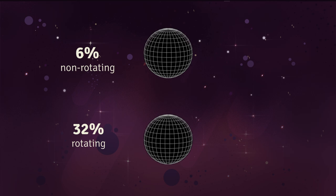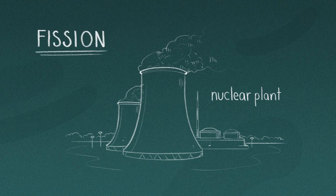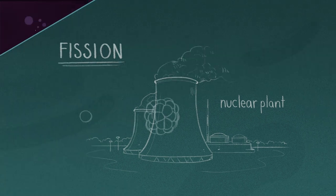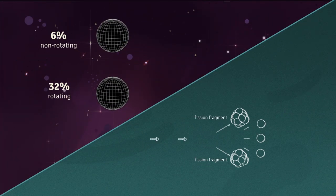This drastically outshines nuclear fission, currently the most efficient widely available mechanism to extract energy from mass. Fission converts just 0.08% of a uranium atom into energy.